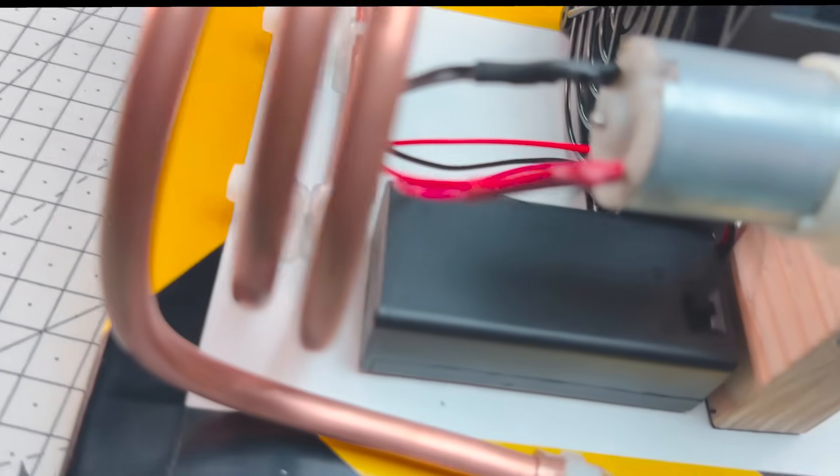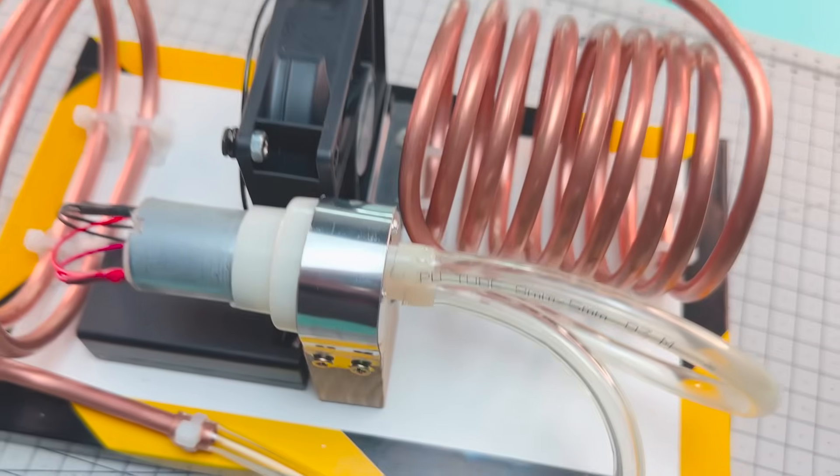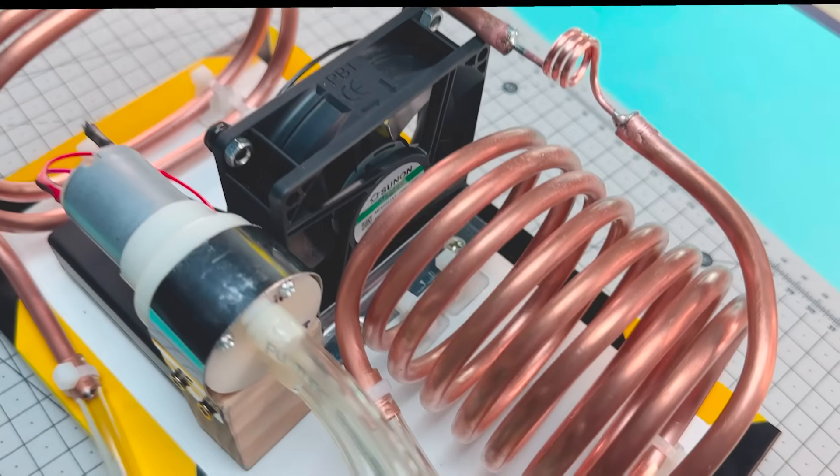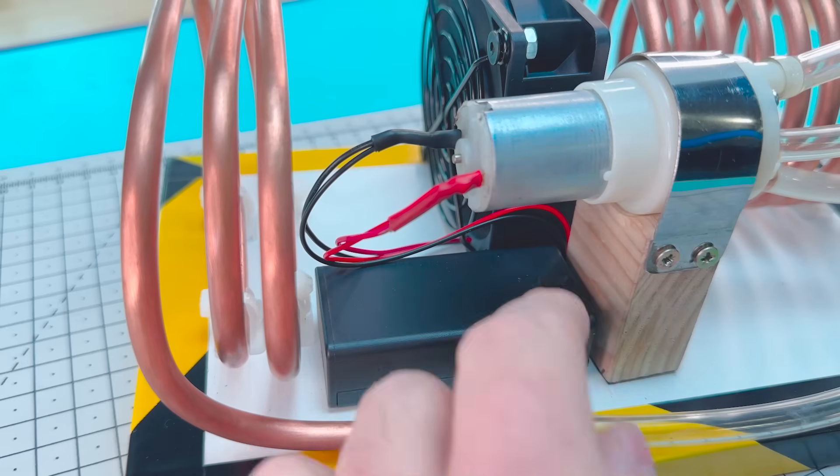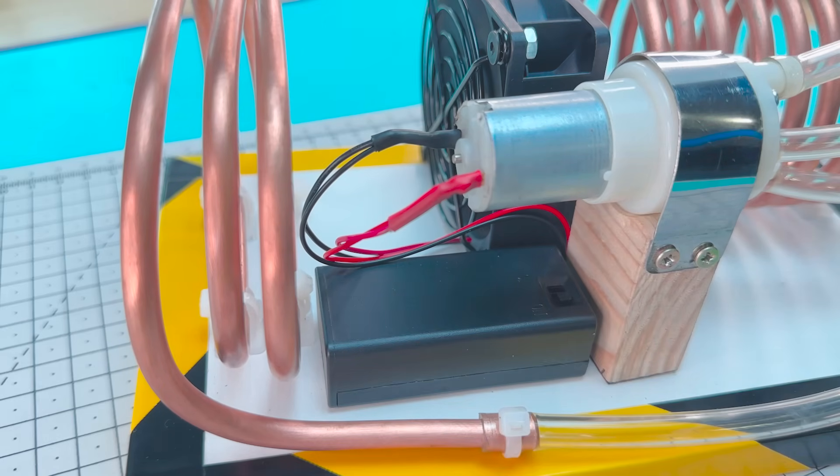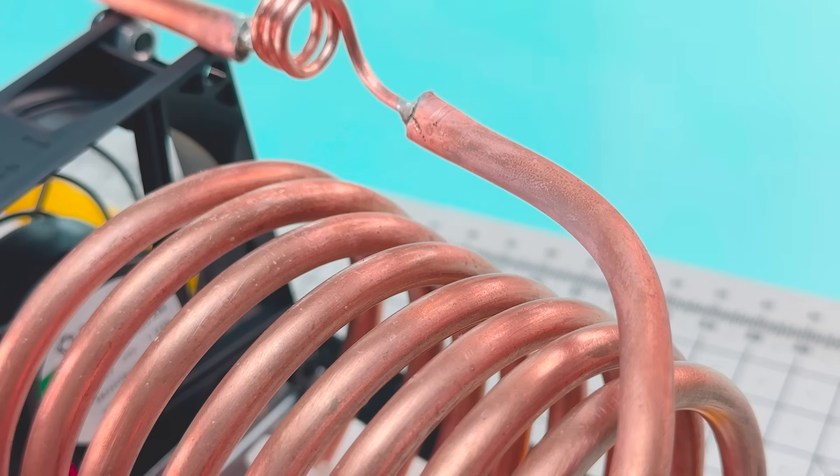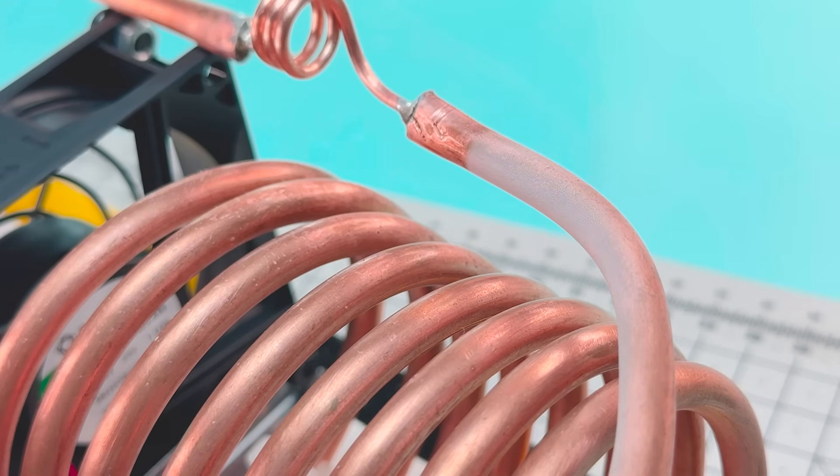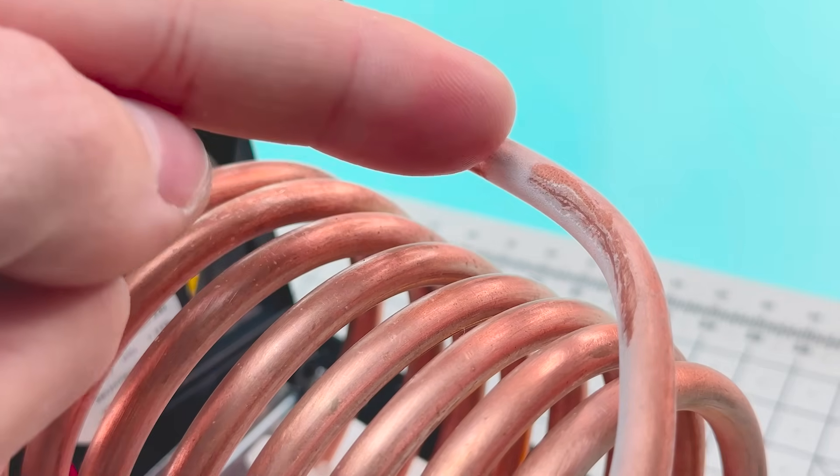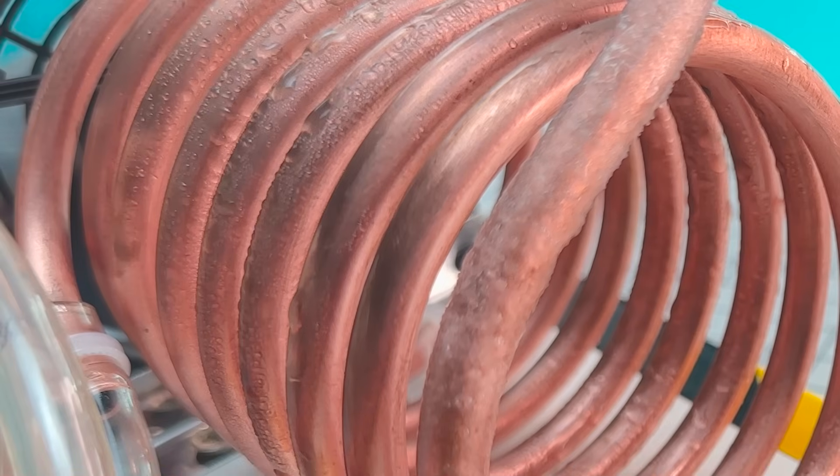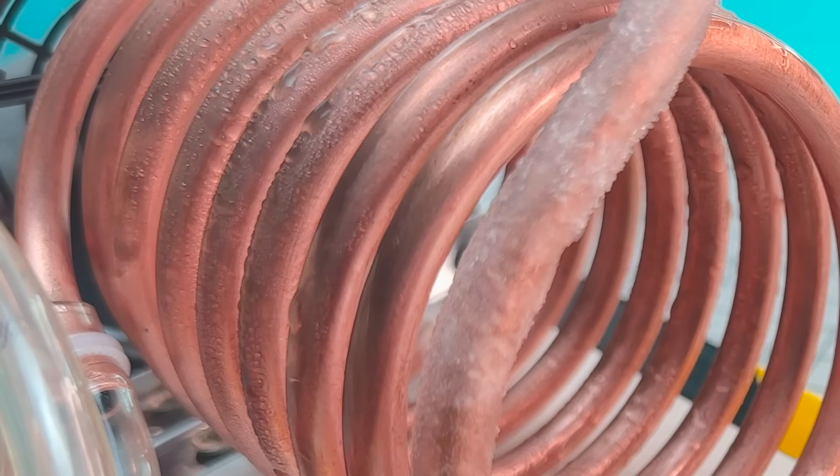We now have our air conditioning unit completed and ready to start cooling the room. Let's connect our battery. As you can see, the tubes freeze quickly, reaching minus 10 degrees Celsius. And the fan will blow a stream of cold air that will help cool any room in just a few minutes.